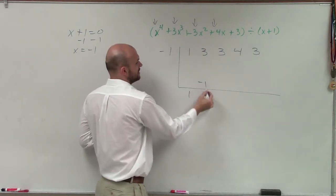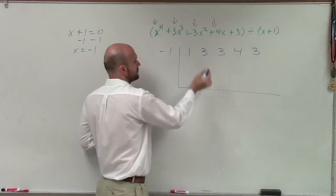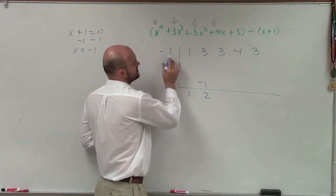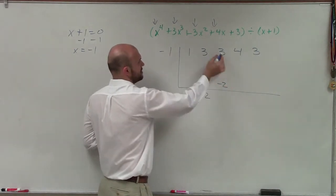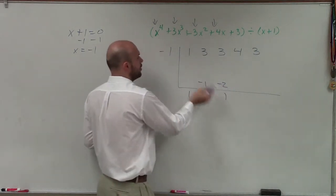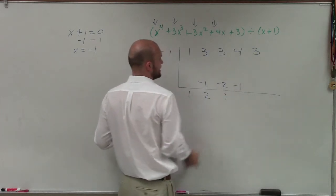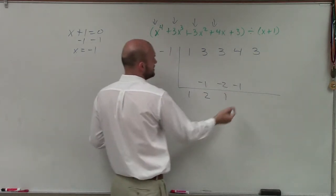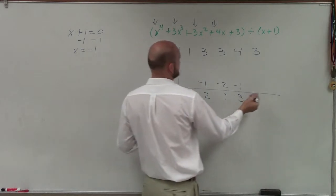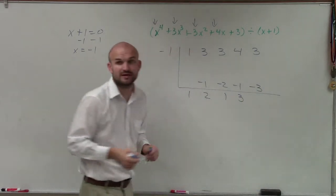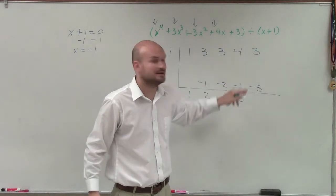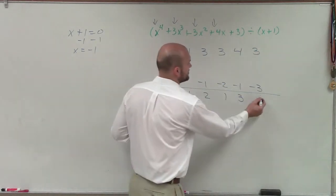1 times negative 1 is negative 1. 3 plus negative 1 is positive 2. 2 times negative 1 is negative 2; 3 plus negative 2 is positive 1. 1 times negative 1 is negative 1; 4 plus negative 1 is positive 3. 3 times negative 1 is negative 3.